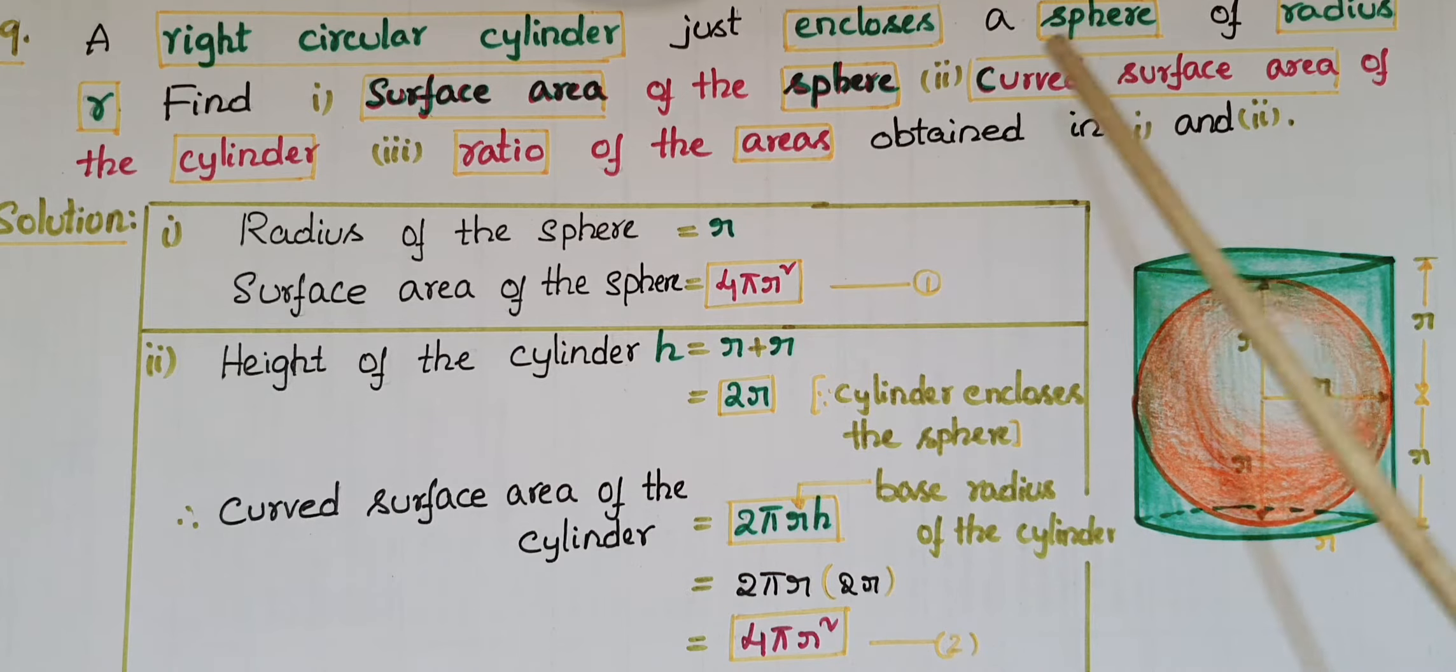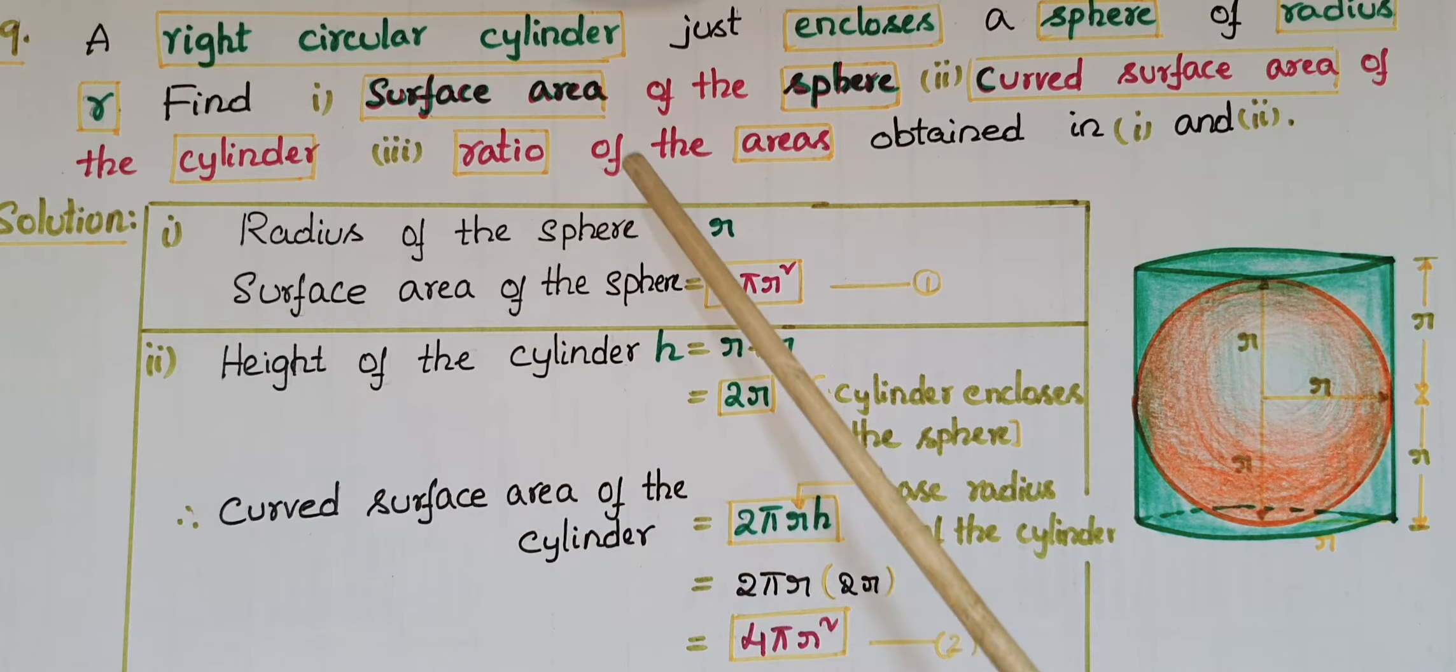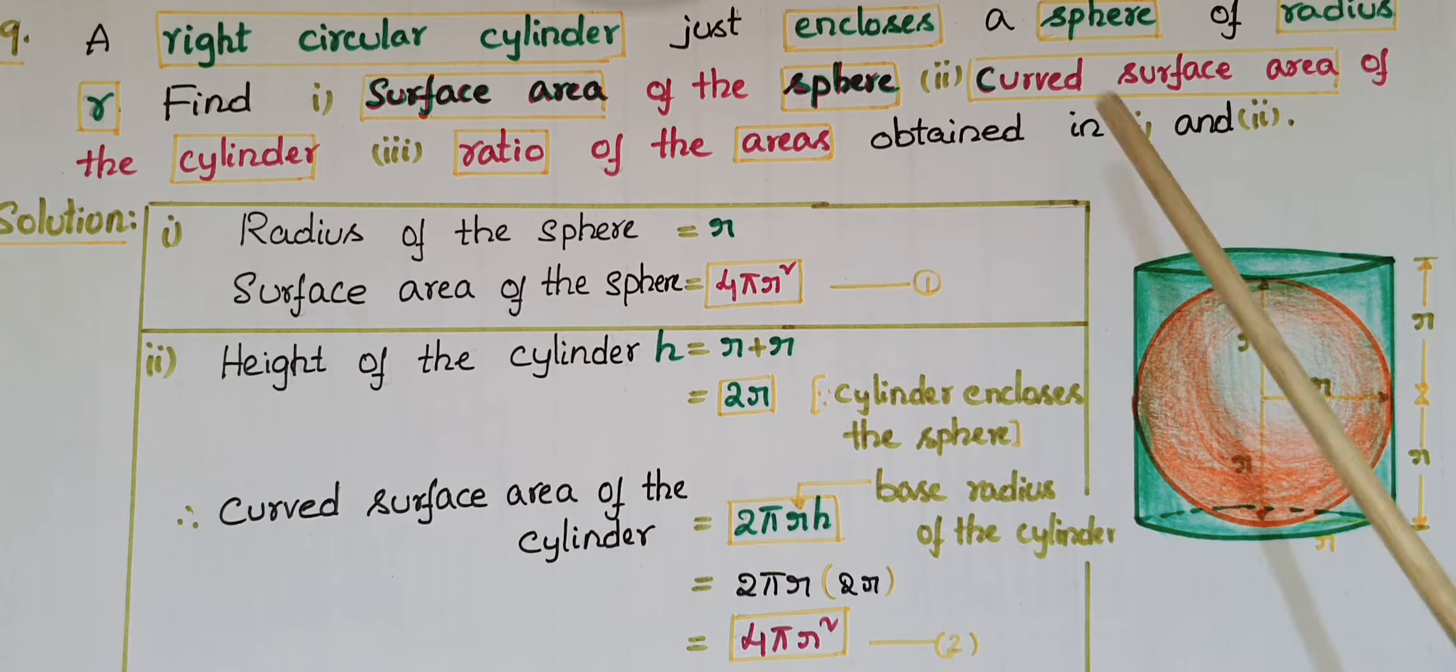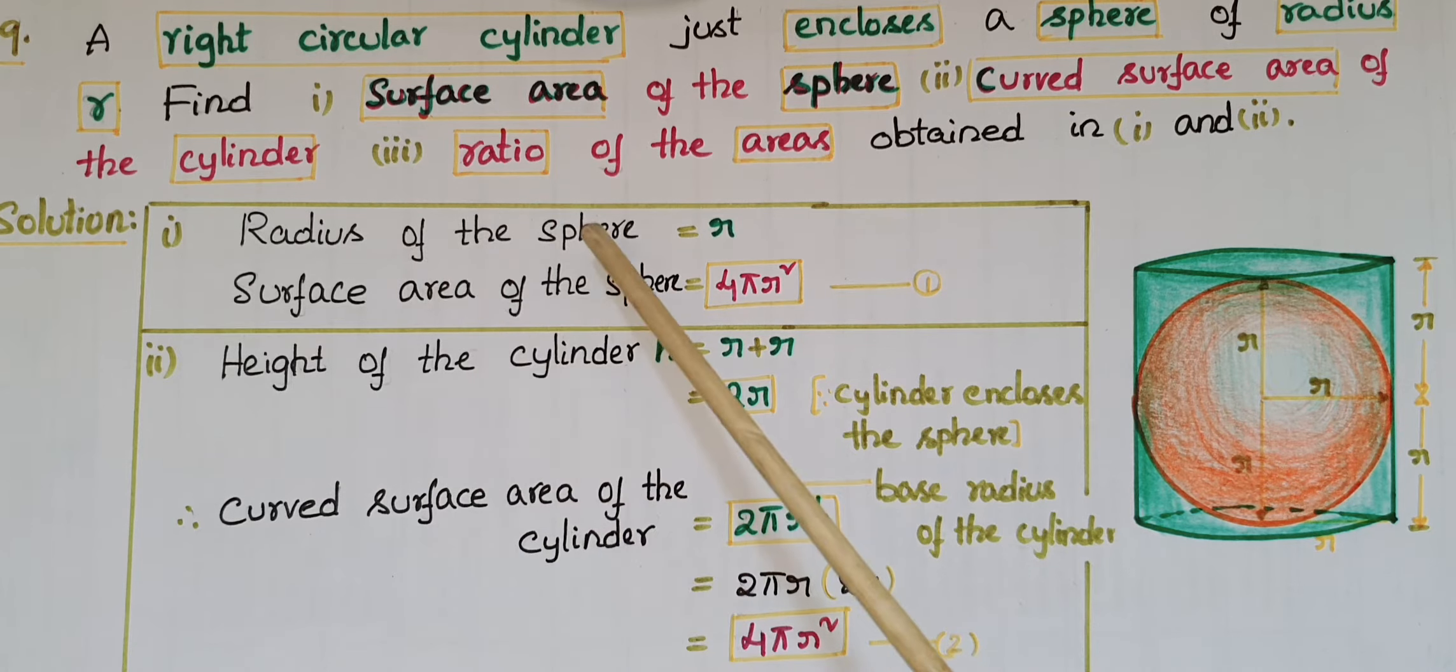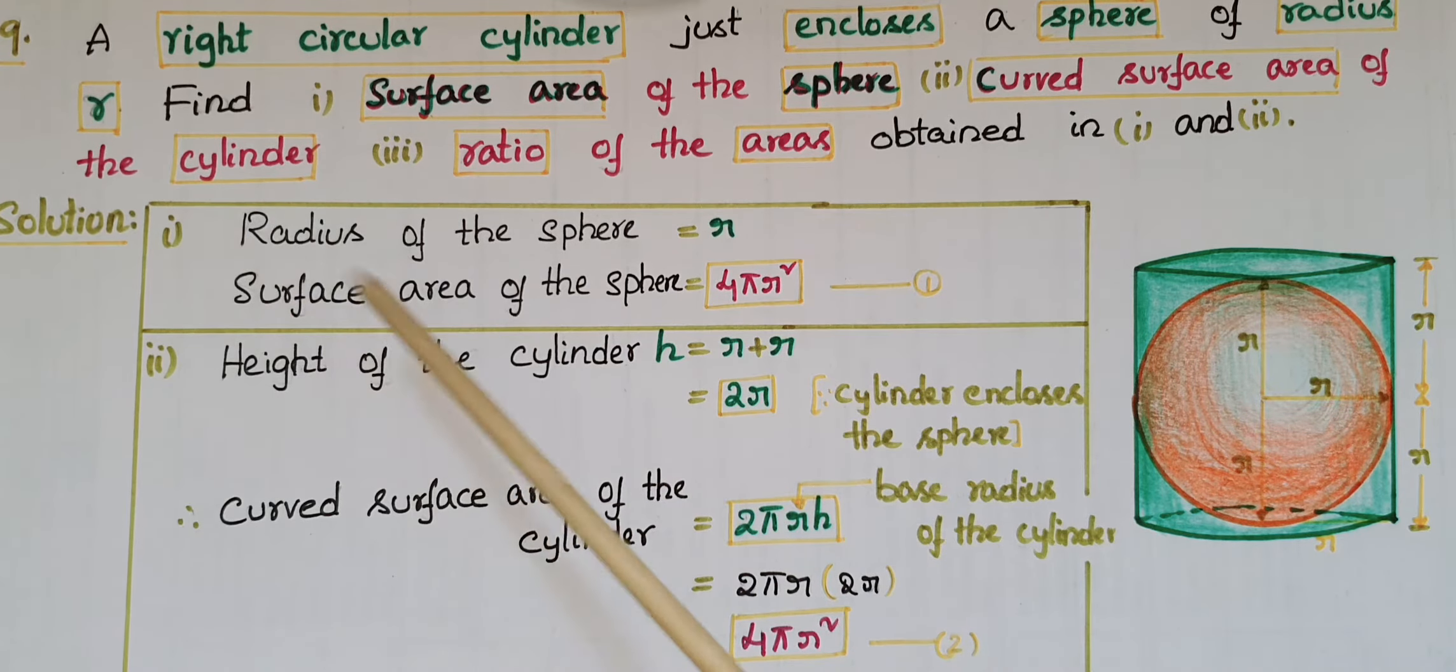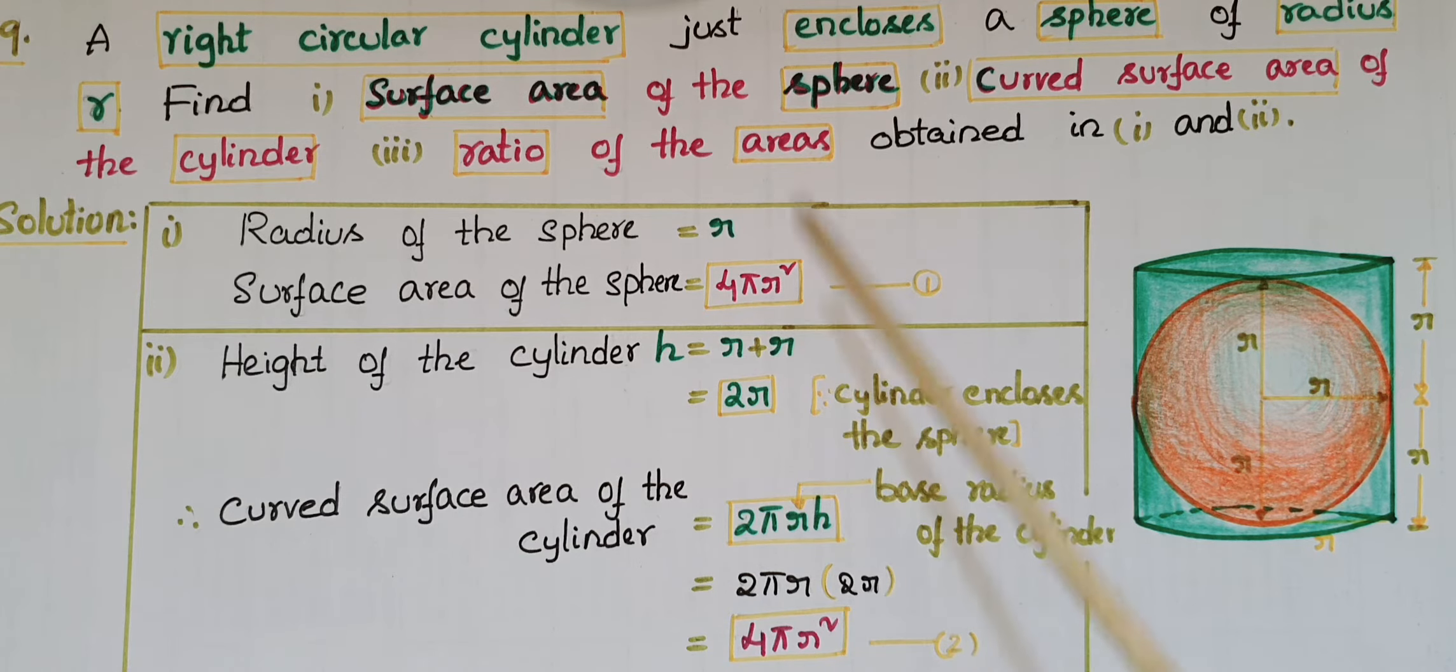So here first one we have to find surface area of the sphere. The radius of the sphere is given, that is r. So surface area of the sphere is equal to 4πr².